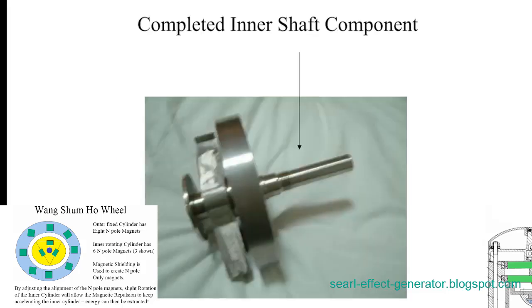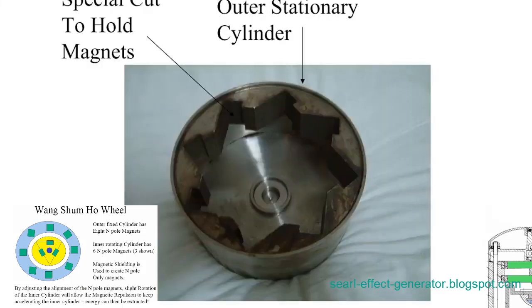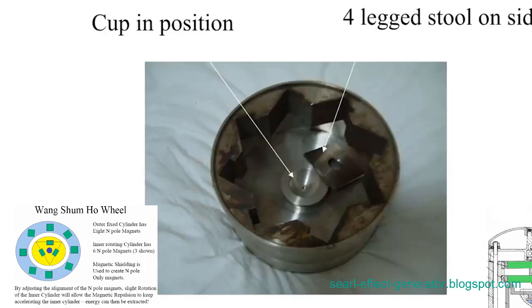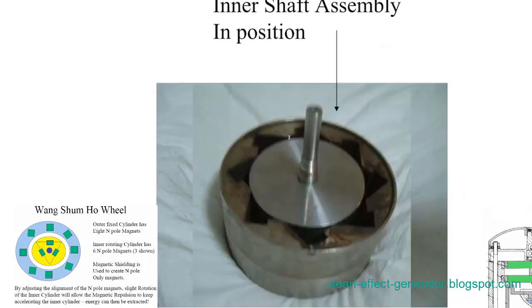Shen He Wang's permanent magnet motor represents a daring venture into the realm of free energy. The intricate combination of magnetic shielding, an overbalanced wheel, and a liquid-filled cup suggests a novel approach to perpetual motion and energy generation. The controversy surrounding its exhibition highlights the potential threat it poses to established energy norms.